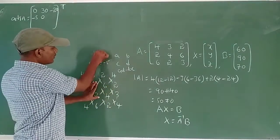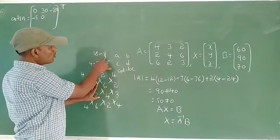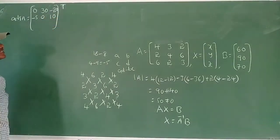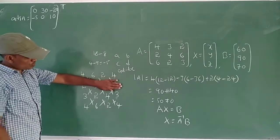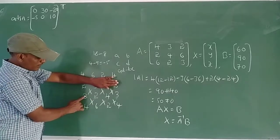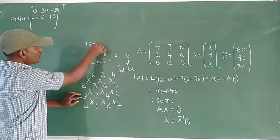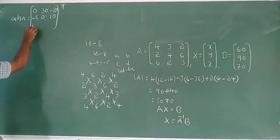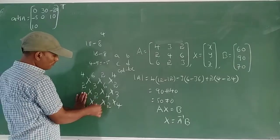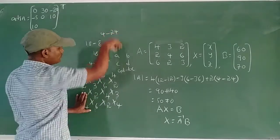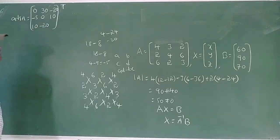Cofactor of element (3,1): close top two lines. Minor [3,2; 4,6], value = 3×6 − 2×4 = 18 − 8 = 10. Cofactor of element (3,2): minor [4,2; 2,6], value = 4×6 − 2×2 = 24 − 4 = 20, with minus sign = −20. Cofactor of element (3,3): minor [4,3; 2,4], value = 4×4 − 3×2 = 16 − 6 = 10.